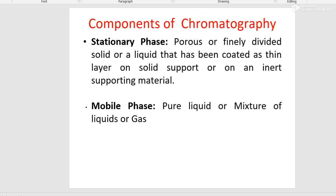Now we will learn about the components of chromatography. For any chromatography, you require a stationary phase and a mobile phase. The stationary phase is a porous or finely divided solid, or a liquid that has been coated as a thin layer on a solid support or on an inert supporting material. So the stationary phase can be a solid or it can be a liquid — liquid coated as a thin layer on some inert support material.